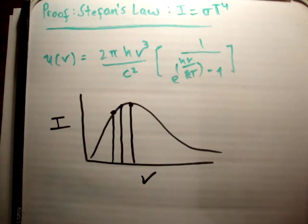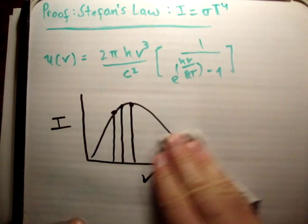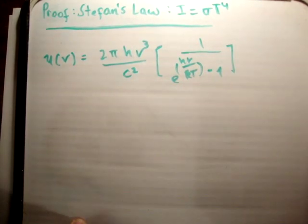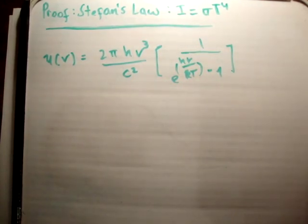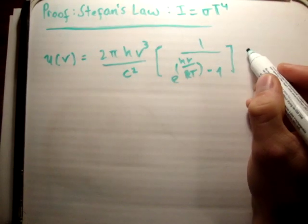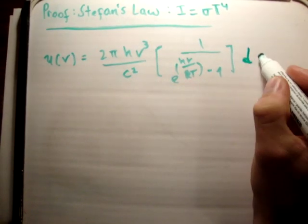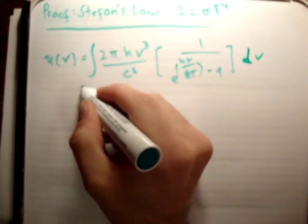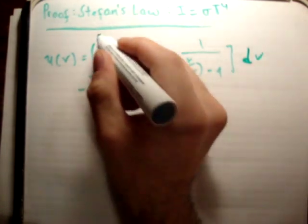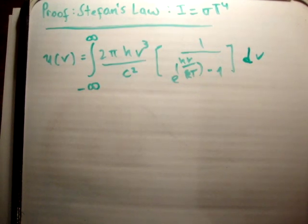By summing all of these values using integrals, you're able to get the total intensity. In order to get the total energy density, we need to integrate d nu from negative infinity to positive infinity.